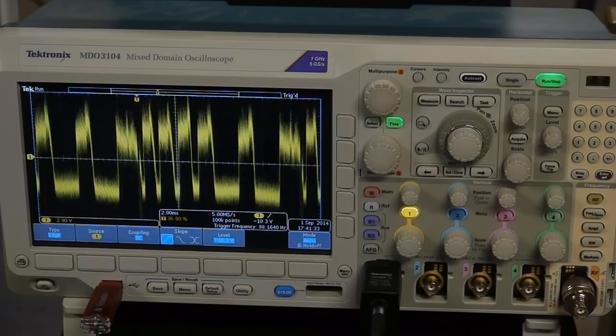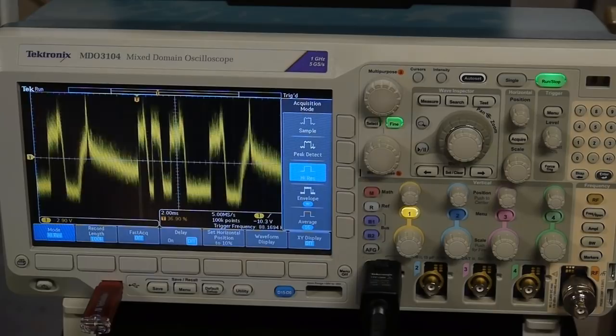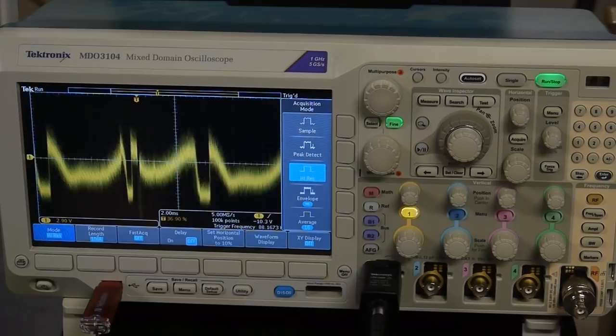Second, I'm going to go to the acquire menu and change the sampling mode to high resolution. Since we're going to be sampling at a relatively low rate, much slower than the scope can sample, we want to take all those values and average them together so that we don't get sampling noise.